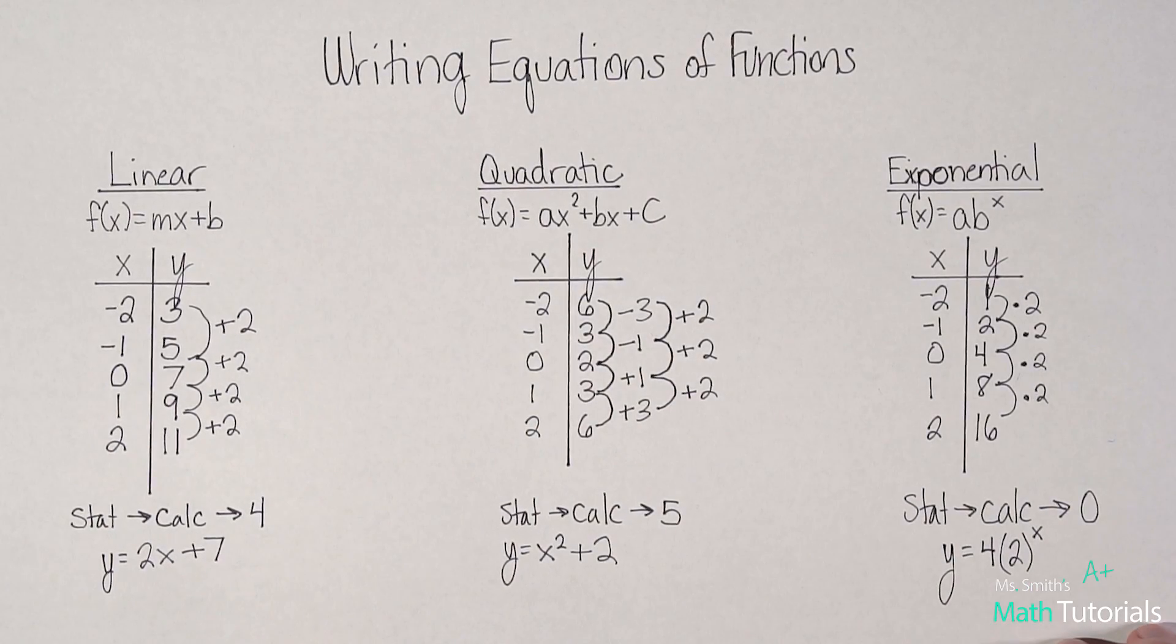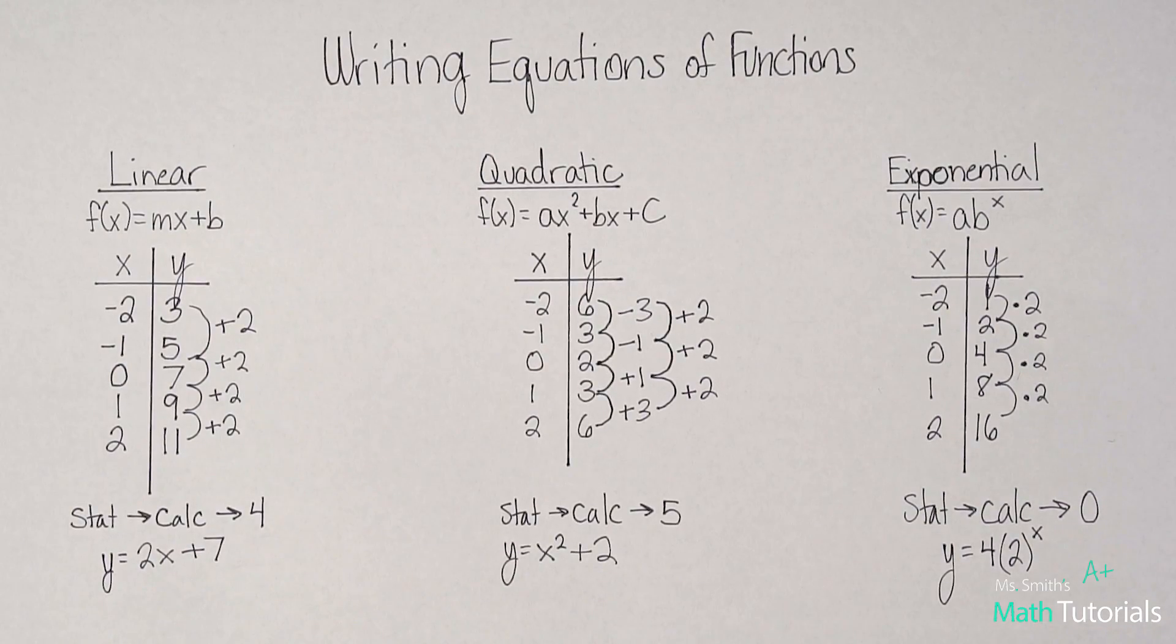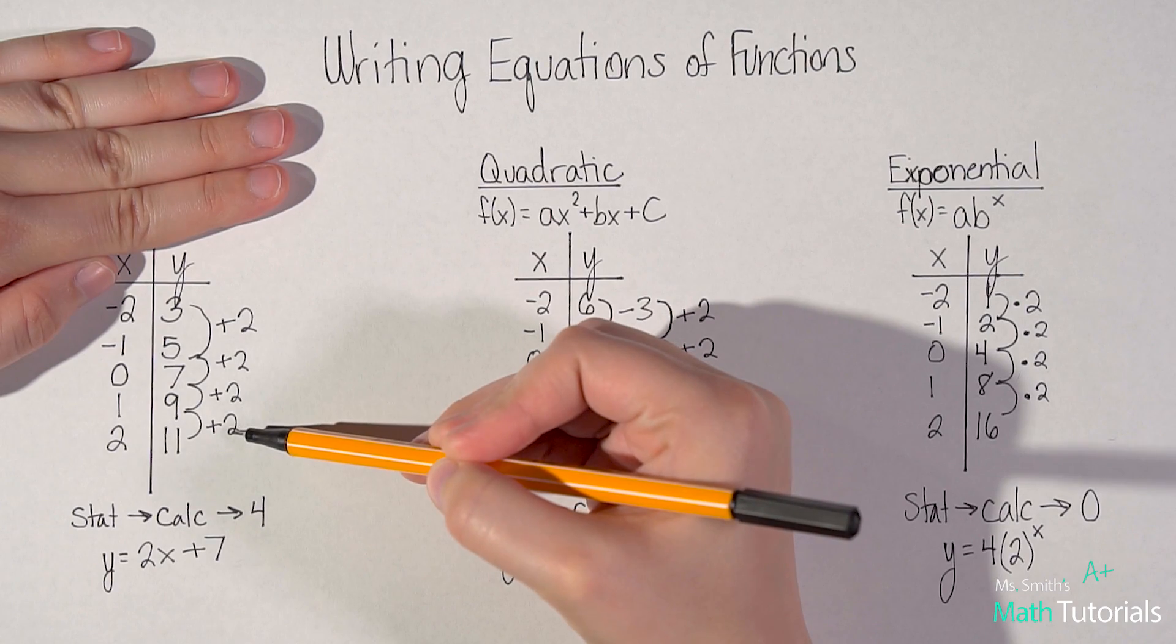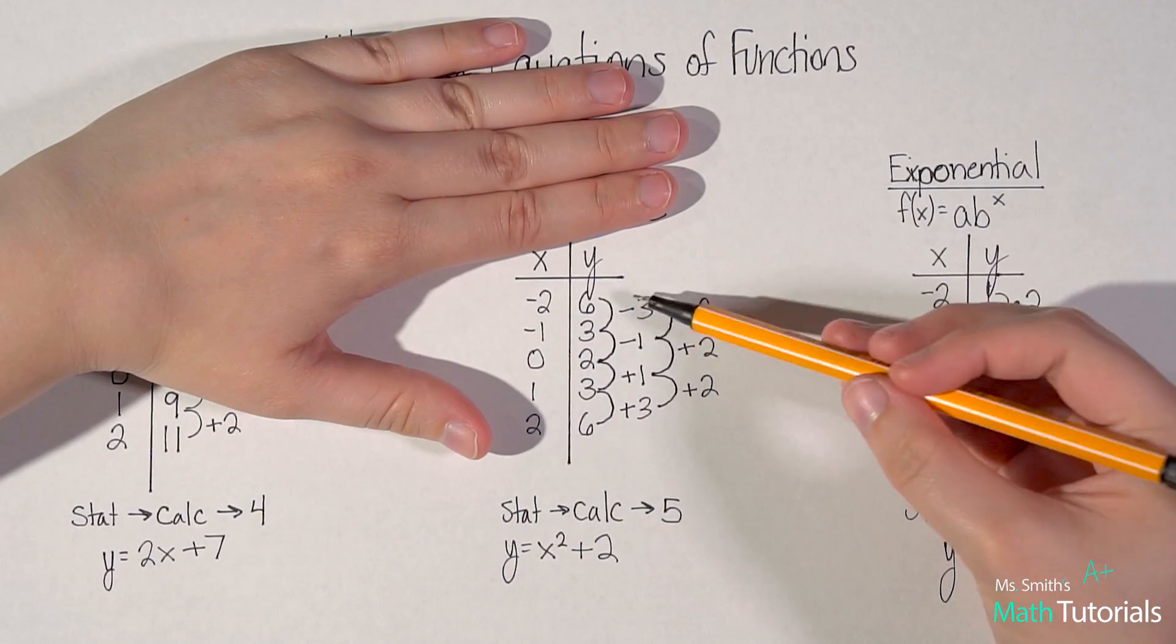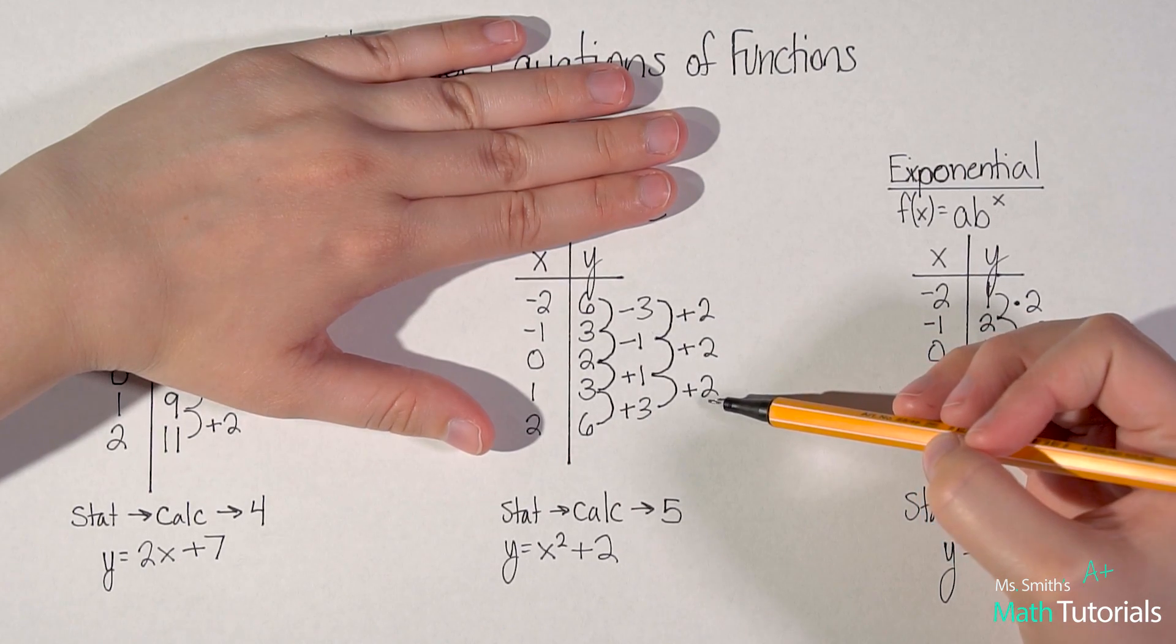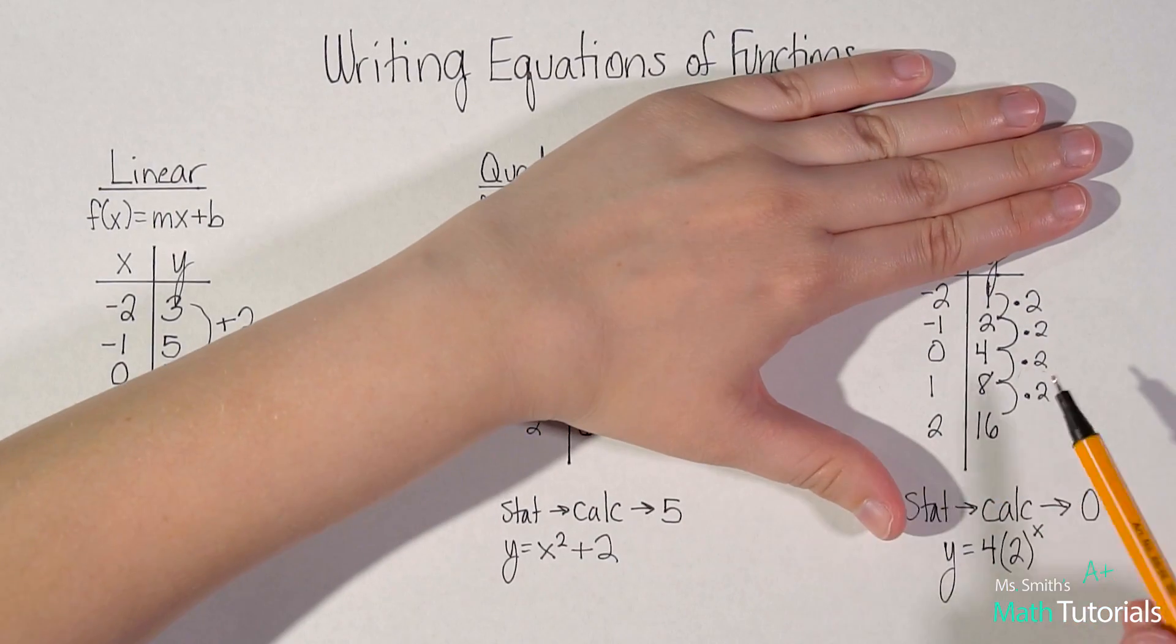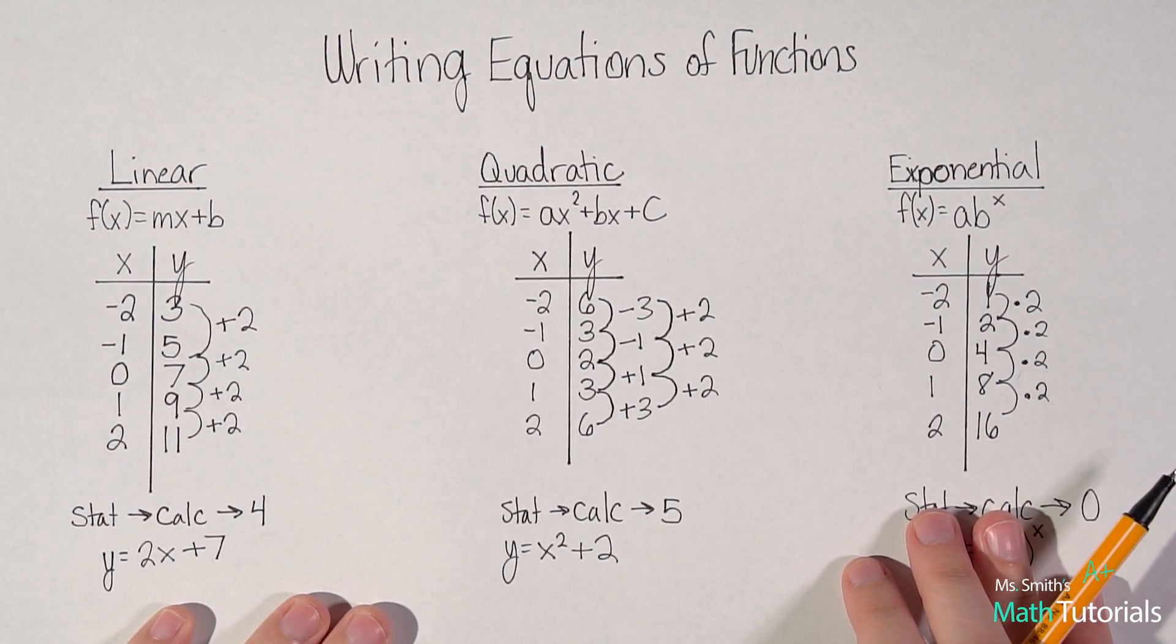Again, if I didn't know that this was linear and I just saw that it was a pattern of adding one time, I would know it's linear. If I see that this is a pattern where I've created two tiers and I'm adding and subtracting, it's quadratic. If I see this as a pattern of multiplying, it's got to be exponential.